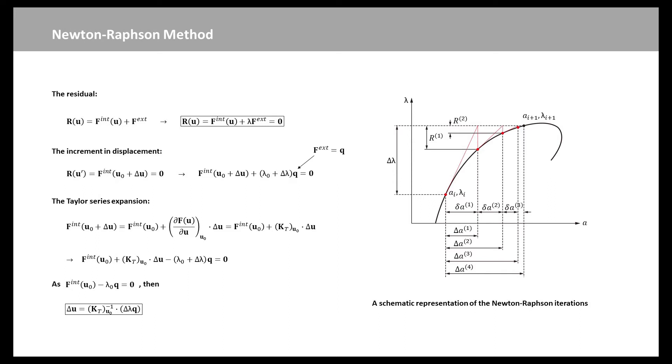Where Kt is the Jacobian matrix of the system of equations and is commonly referred to as the stiffness matrix.